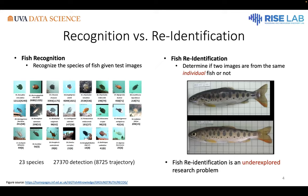In other words, given two images, we want to determine if those two images are from the same individual fish or not. We conducted a comprehensive literature survey and found this problem has not been well studied. That's good news for researchers — we have new problem definitions and can propose new solutions.